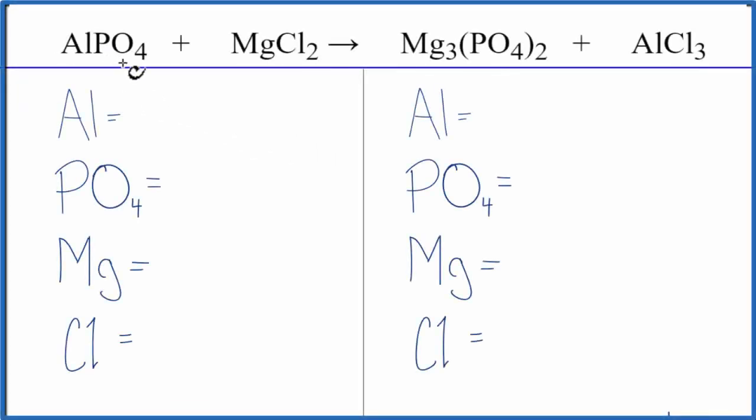In this equation we have AlPO4 plus MgCl2. So let's count the atoms up on each side.